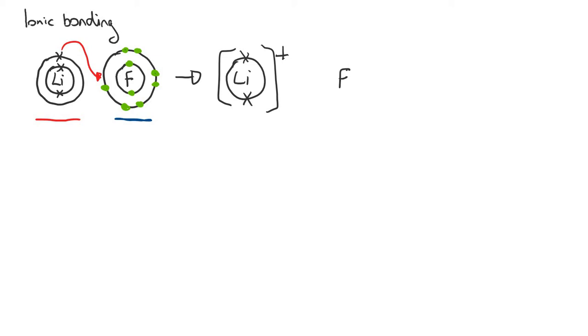As the outer shell electron has been transferred over to fluorine, nothing has happened to fluorine's nucleus, and its inner shell of electrons, and the outer shell of electrons, apart from the new electron that it has gained from lithium. It is worth knowing that, even though it represents the electrons as a dot and a cross, they are in fact the same thing, it's just for representative purposes. Importantly, now because fluorine has an extra electron, we put a negative charge in the top right-hand corner, outside of the square brackets.